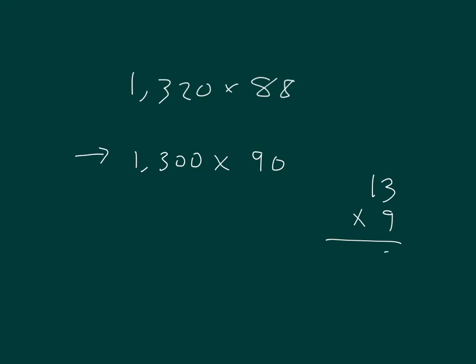9 times 3 is 27. 7, regroup the 2. 9 times 1 is 9, plus 2 is 11. So I have 117 thousands, which I can write out. That is one estimate for this product.